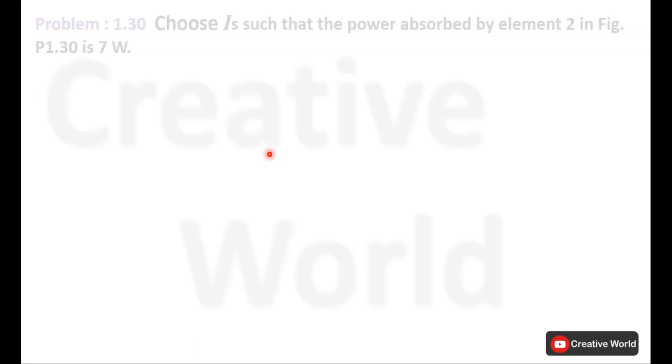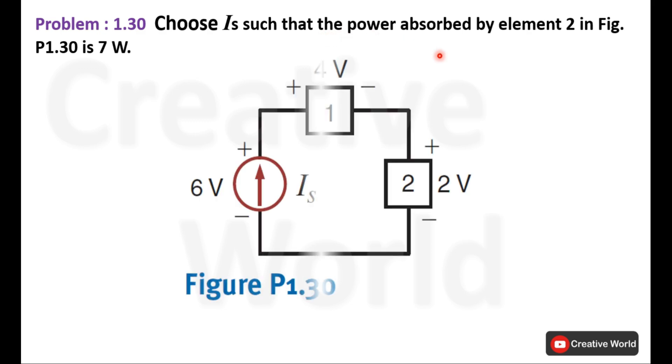First read the scenario. In this scenario it is asked to choose Is such that the power absorbed by element 2 in figure P1.30 is 7 Watt. We have to choose the value of Is current passing through this circuit so that the power absorbed by this element 2 should be 7 Watt.